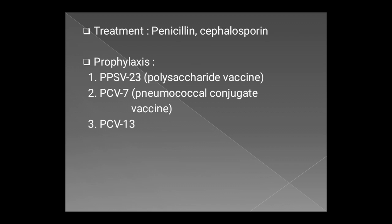The last section is prophylaxis. It is done with three types of vaccines: PPSV23, which is a polysaccharide vaccine for 23 strains; PCV7, which is a pneumococcal conjugate vaccine for 7 strains; and PCV13, which is the pneumococcal conjugate vaccine with six additional serotypes added, now available for 13 strains and applicable for young children.